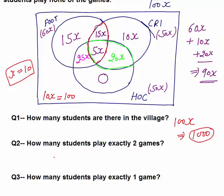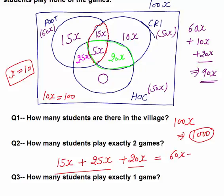Question 2: How many students play exactly 2 games? Exactly 2 games means: 15x (football and cricket only) + 25x (football and hockey only) + 20x (cricket and hockey only) = 60x. With x = 10, the answer is 600 students.